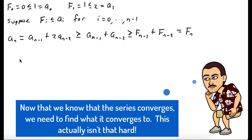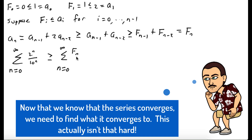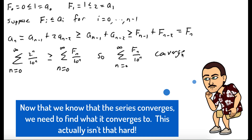We can use the comparison test to show our series converges. The sum from n equals 0 to infinity of 2 to the n over 10 to the n is a geometric series that converges, and it's greater than or equal to the series we're interested in. Since the bigger series converges, our series must also converge. We conclude that the sum from n equals 0 to infinity of fₙ over 10 to the n converges. But the question is, what does it converge to?